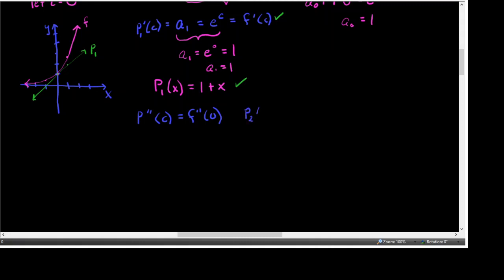Our degree two polynomial is going to be A sub 0 plus A sub 1 times X plus A sub 2 times X squared. We're going to want all of the conditions we've met so far to be true. So we're going to need the first derivative of that equation as well as the second derivative of that equation. We'll also need the same levels of derivatives for the function — its function value, its first derivative — coolest function ever — and its second derivative — coolest function ever.